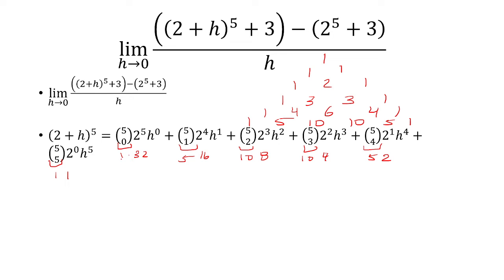So when we multiply 1 and 32, we get 32, 5 times 16 is 80, 10 times 8 is also 80, 10 times 4 is 40, 5 times 2 is 10, and then 1 times 1 is 1.